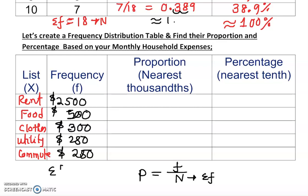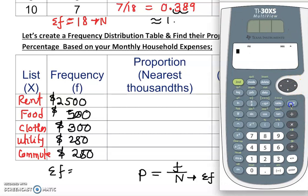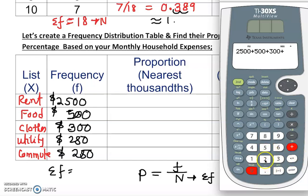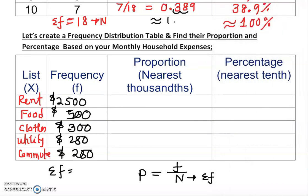The proportion formula is p = f / n, where n is the sum of all frequencies. So let's add: 2500 + 500 + 300 + 250 + 250. That gives us n = 3,800. That is the total monthly expense.